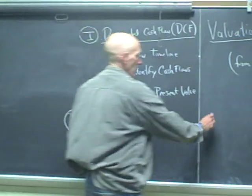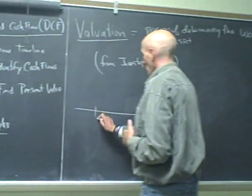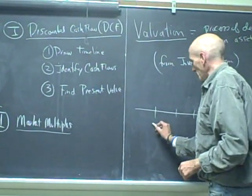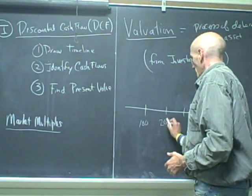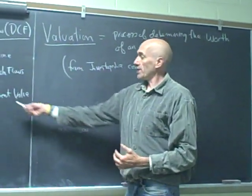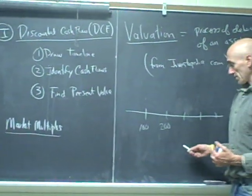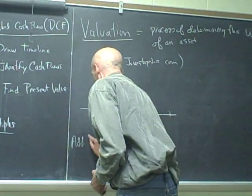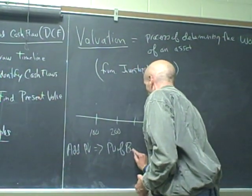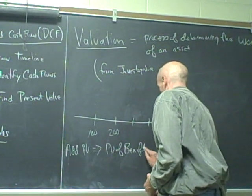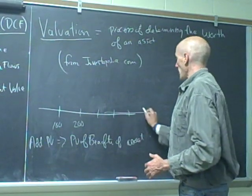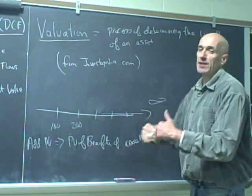What we want to do is identify when the cash flows are occurring. You identify cash flows, $100, $200, whatever, you identify what period they're coming in. You then take the present value of those, add them up, add the present values to get the present value of the benefits of this asset. And you go all the way out. You go up from time zero to time infinity. You add them all up.